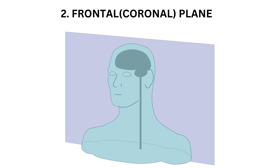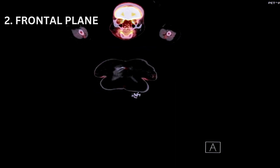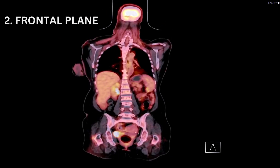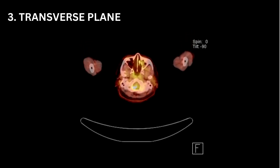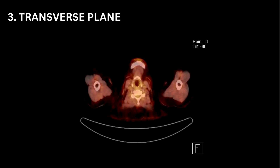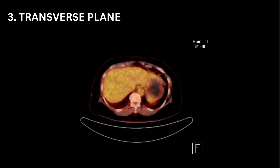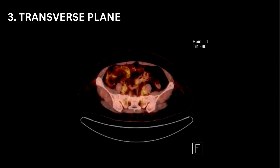2. The frontal or coronal plane — a vertical plane that divides the body into front (anterior) and back (posterior) portions. This plane is perpendicular to the sagittal plane. 3. The transverse or horizontal plane — a horizontal plane that divides the body into upper (superior) and lower (inferior) portions. This plane is perpendicular to both the sagittal and frontal planes.